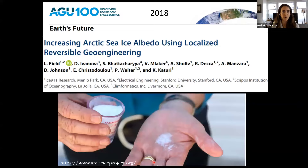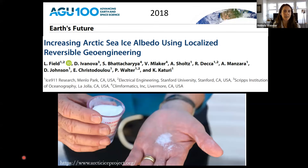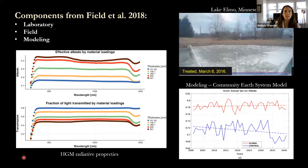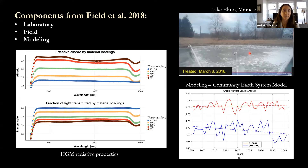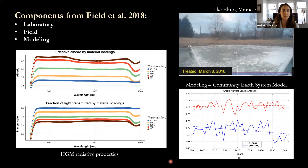Now let's get back to the study — what Steve and I were really interested in is assessing HGMs' usefulness for the Arctic sea ice environment. Diving into the Field et al. study, they had three components: a laboratory component examining radiative properties of the HGMs, a field component where they applied HGMs on a frozen lake in Minnesota, and a climate modeling component. I don't speak extensively to the modeling, but happy to take questions on it.